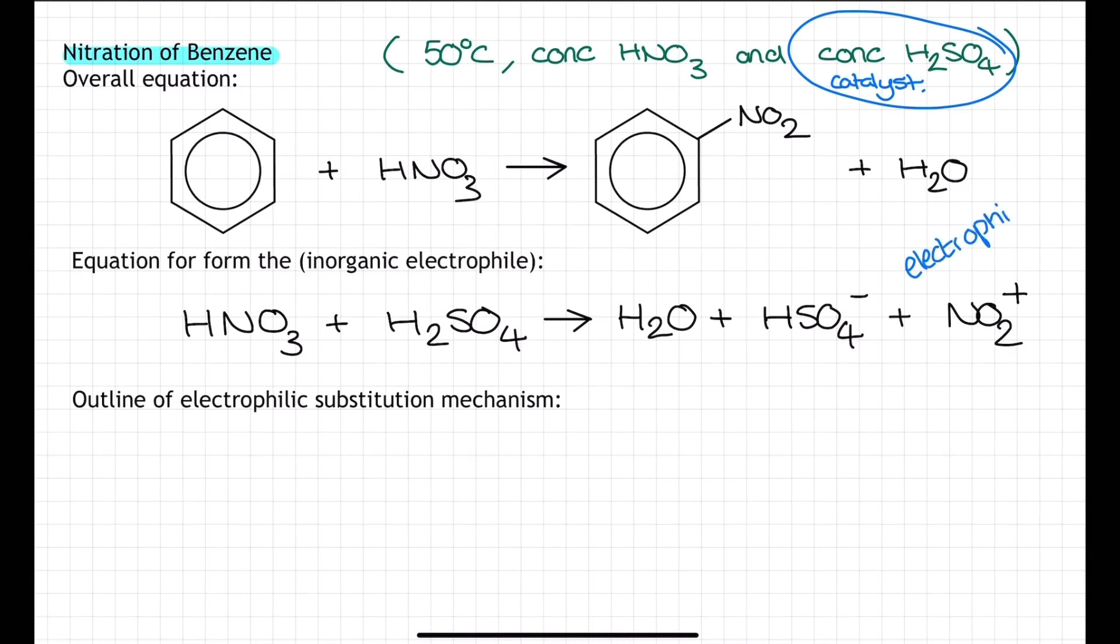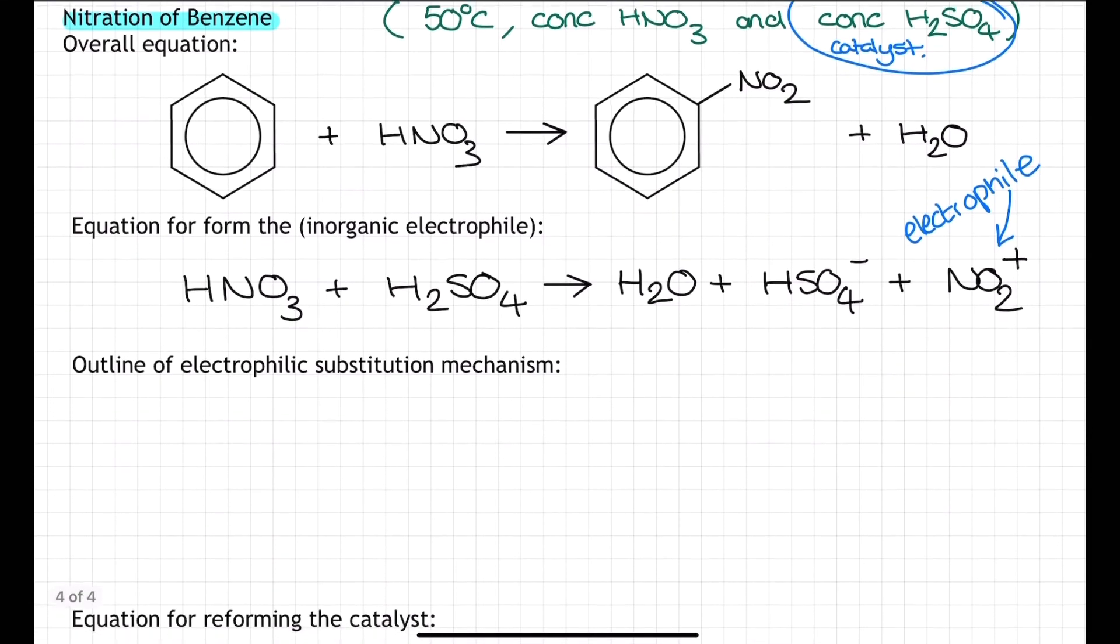So here in this equation, we see nitric acid react with sulfuric acid to produce water, HSO4 minus, and the nitronium ion NO2 plus, which is our electrophile in the nitration of benzene.